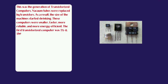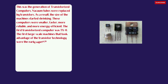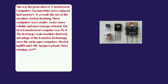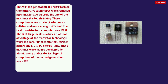The first transistorized computer was TX0. The first large-scale machines that took advantage of the transistor technology were the early supercomputers: Stretch by IBM and LARC by Sperry Rand. These machines were mainly developed for atomic energy laboratories. Typical computers of the second generation were the IBM 1400 and 7000 series.